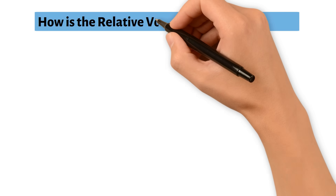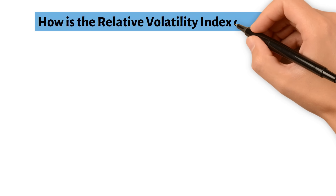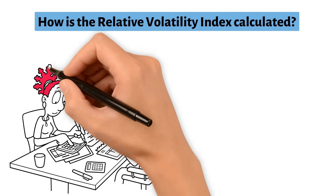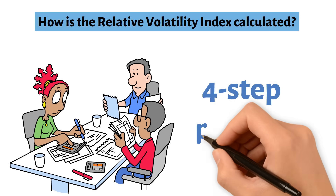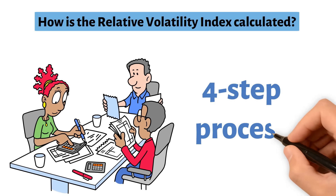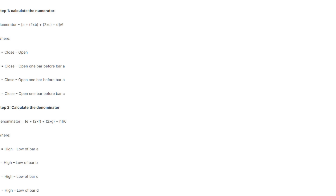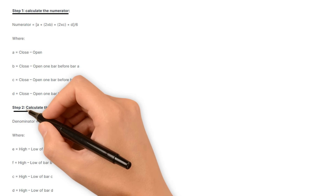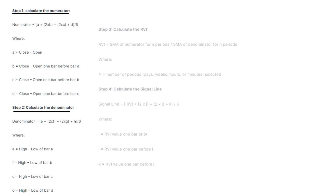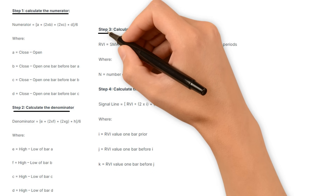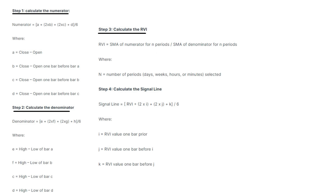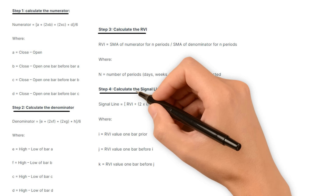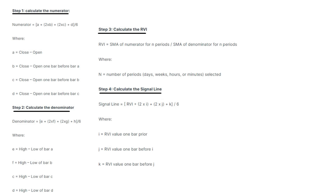How is the Relative Vigor Index calculated? To calculate the Relative Vigor Index, you need to follow a four-step process. First, calculate the numerator. Second, calculate the denominator. Third, you calculate the RVI. And finally, you end the process by calculating the signal line.